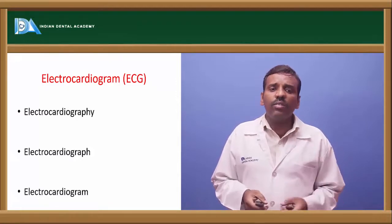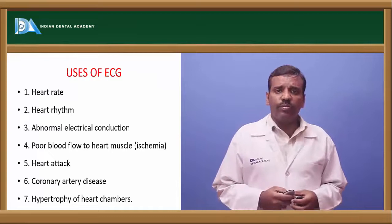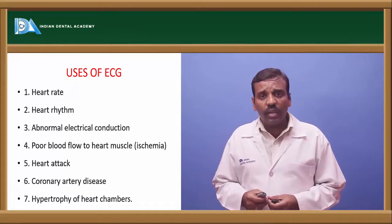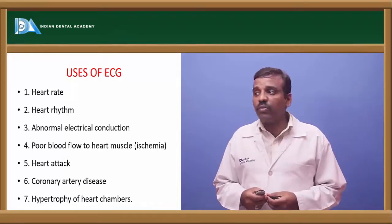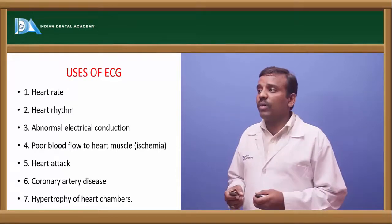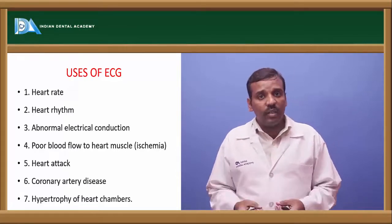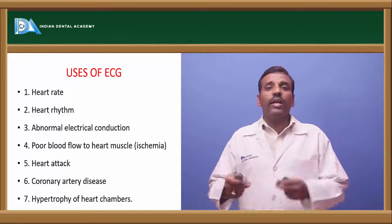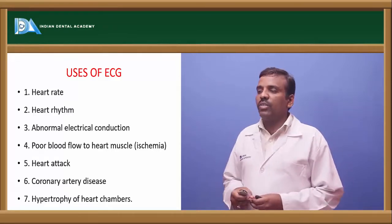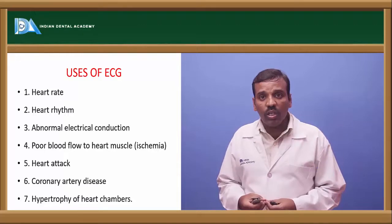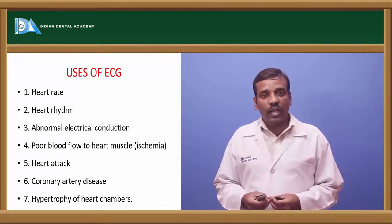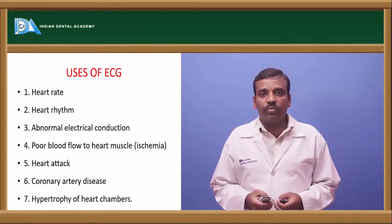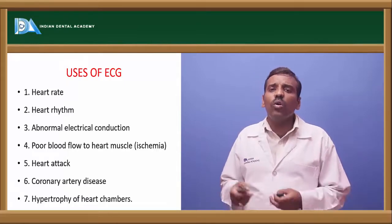The uses of ECG include finding out the heart rate and heart rhythm, whether normal or abnormal. It detects abnormal electrical conduction, poor blood flow into the heart muscle (ischemia), heart attacks, coronary artery diseases, and hypertrophy of the heart chambers.